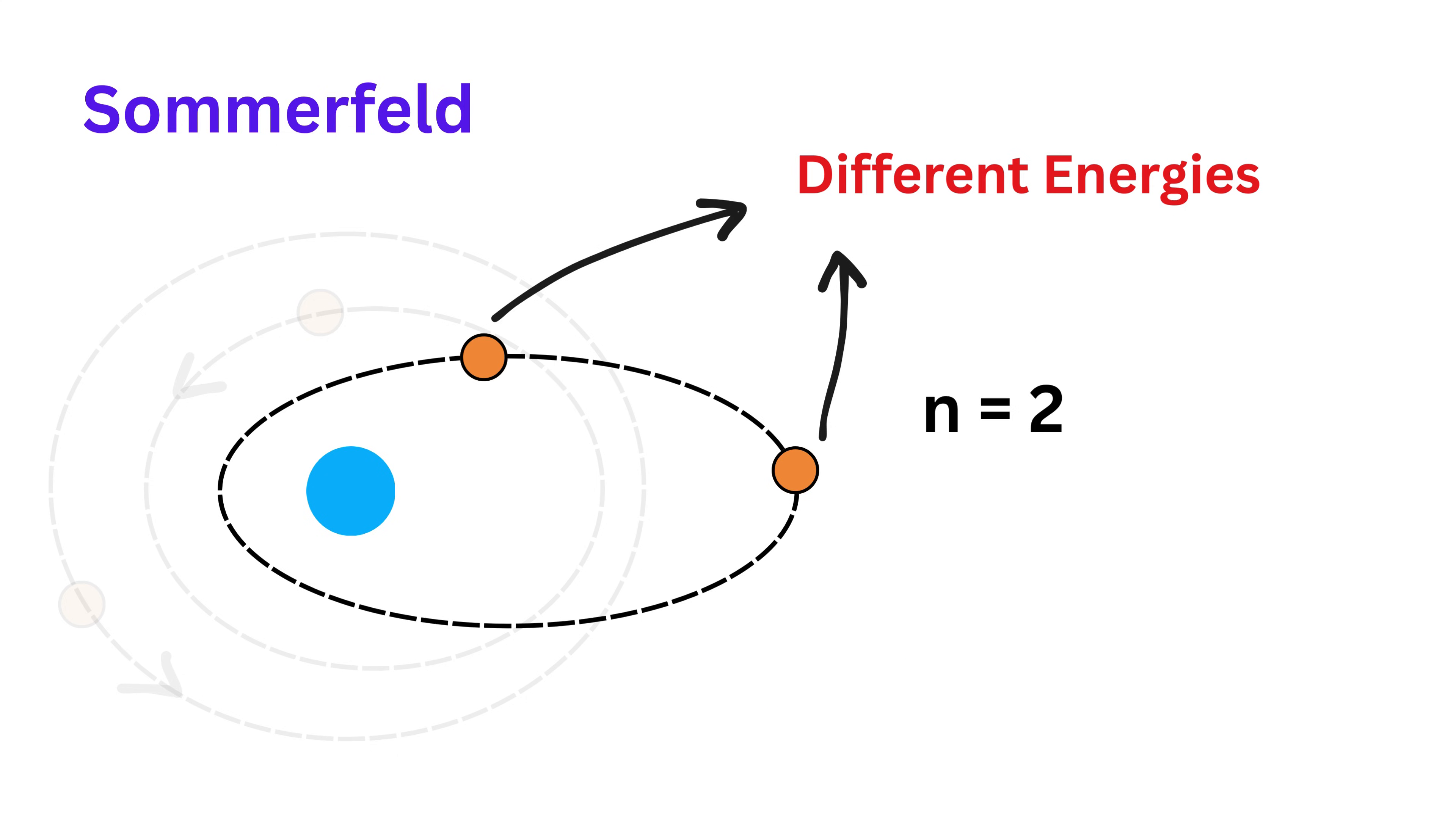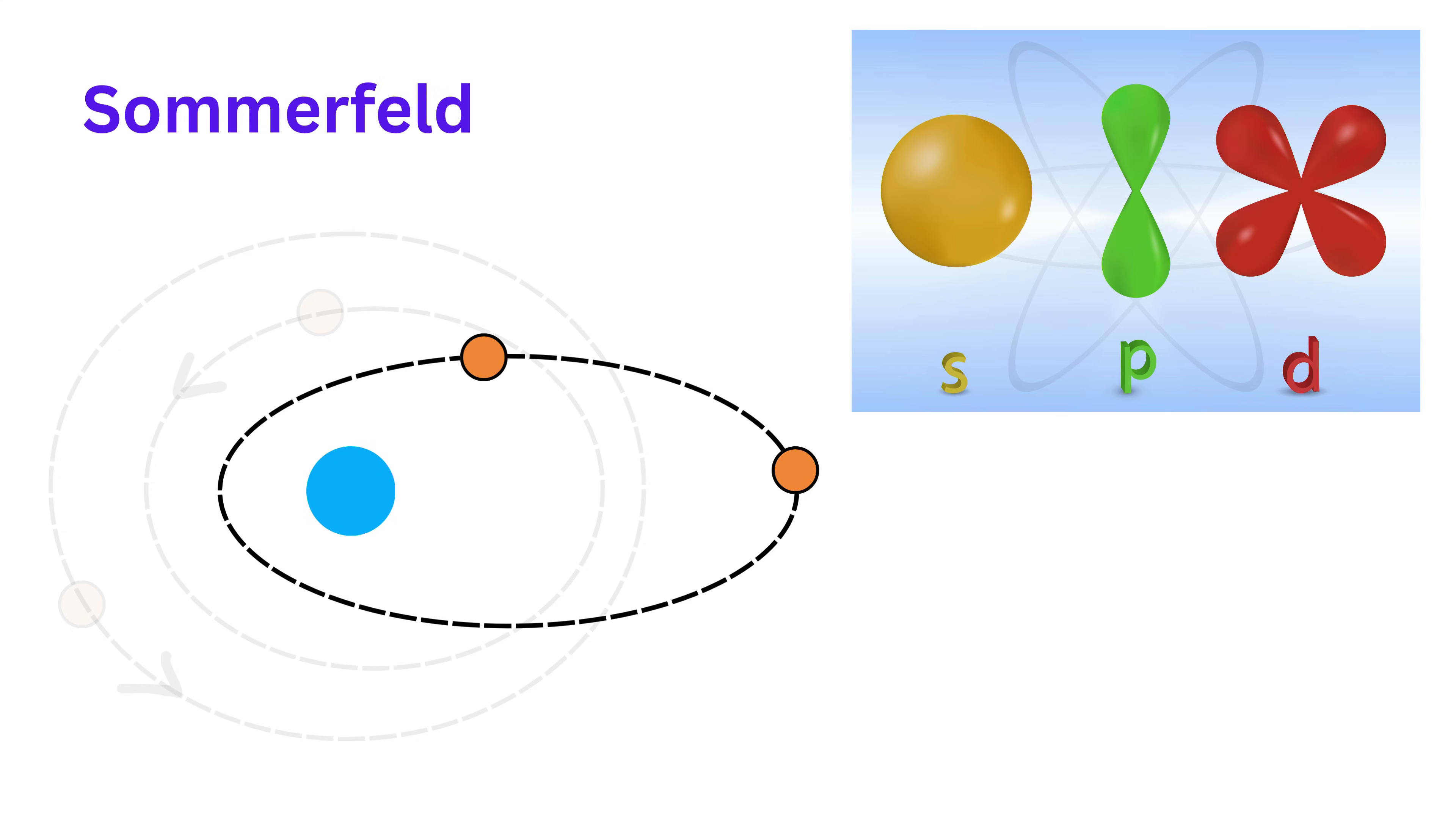Think of an energy level like a building floor and sublevels like rooms on that floor. So for example, energy level two or the second orbit might have two sublevels called s orbitals and p orbitals. So now we had a more refined picture with main energy levels and sublevels inside them.